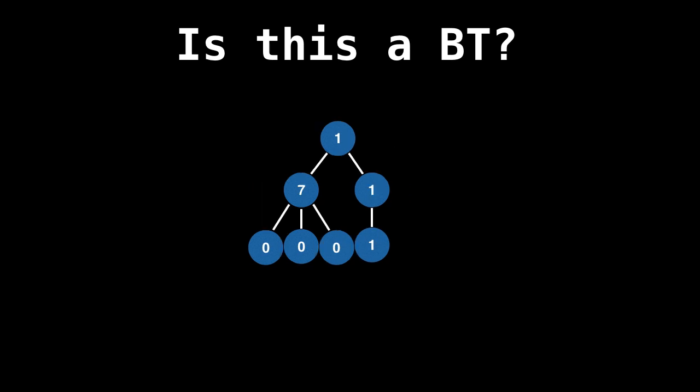How about this one? No, you can see that seven has three children, so it's not a binary tree.